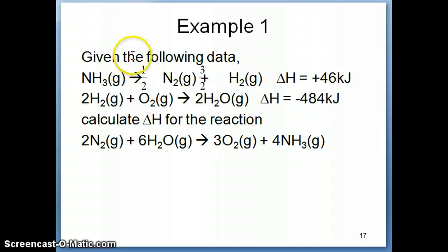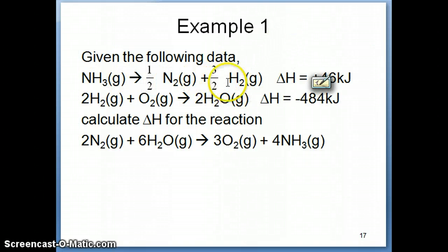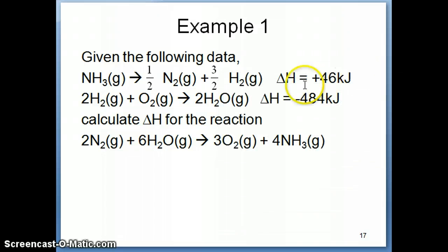Here we have an example of a reaction where you're given two reactions as you can see at the top. The top reaction is NH3 going to half N2 and three halves H2, and the delta H of that reaction is shown right here. Delta H is plus 46 kilojoules. Remember that's referring to per mole of reaction.